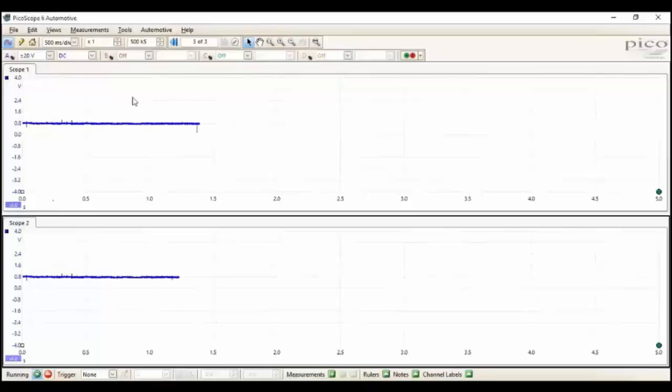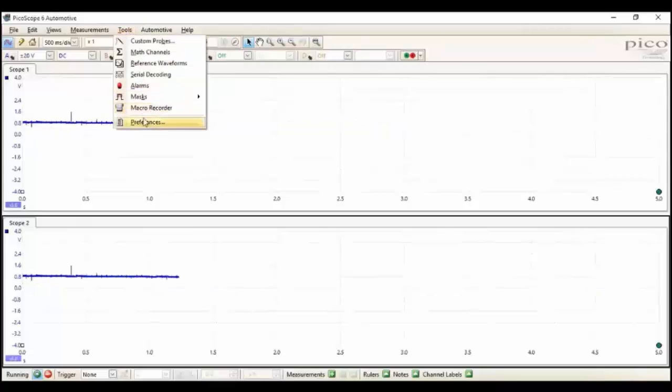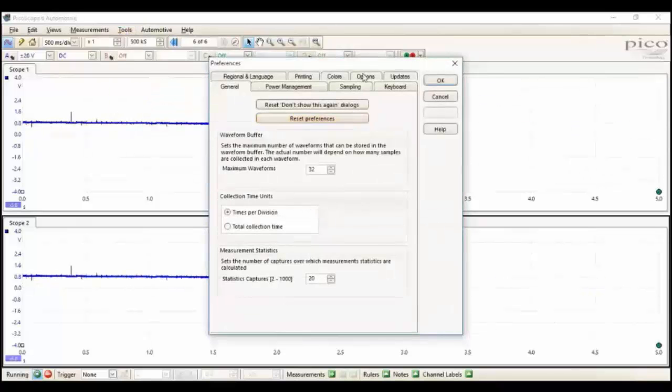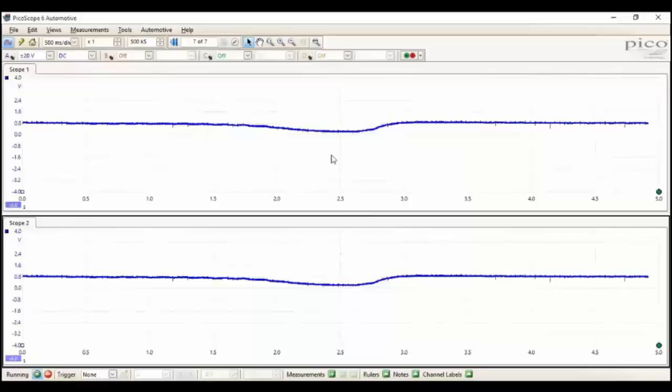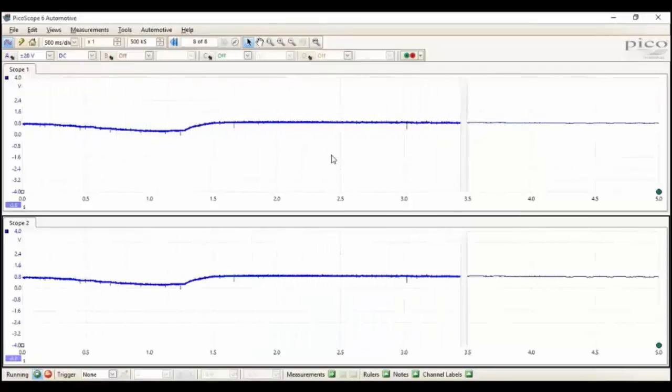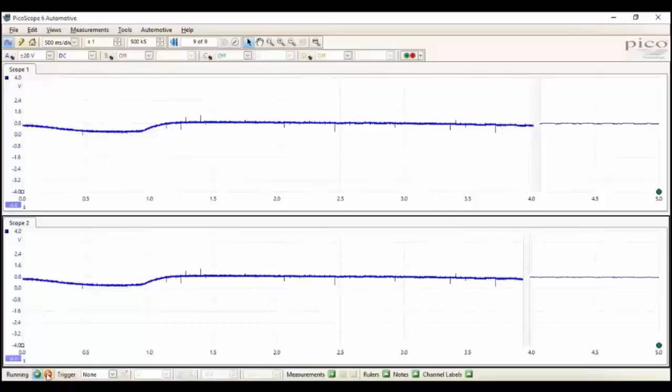So that's under the tools menu. Tools, Preferences, Sampling and display previous waveform buffer. Okay. And there we have it. So duplicate waveforms. Separate views. Unfiltered on the left. Previous filtered waveform on the right.